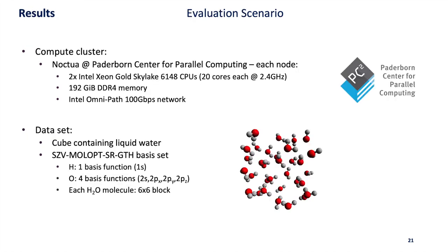Now I want to quickly share our results. We evaluated our method on the Noctua compute cluster at the Paderborn Center for Parallel Computing where each node has two Xeon Skylake CPUs, 20 cores each, so 40 cores per node.